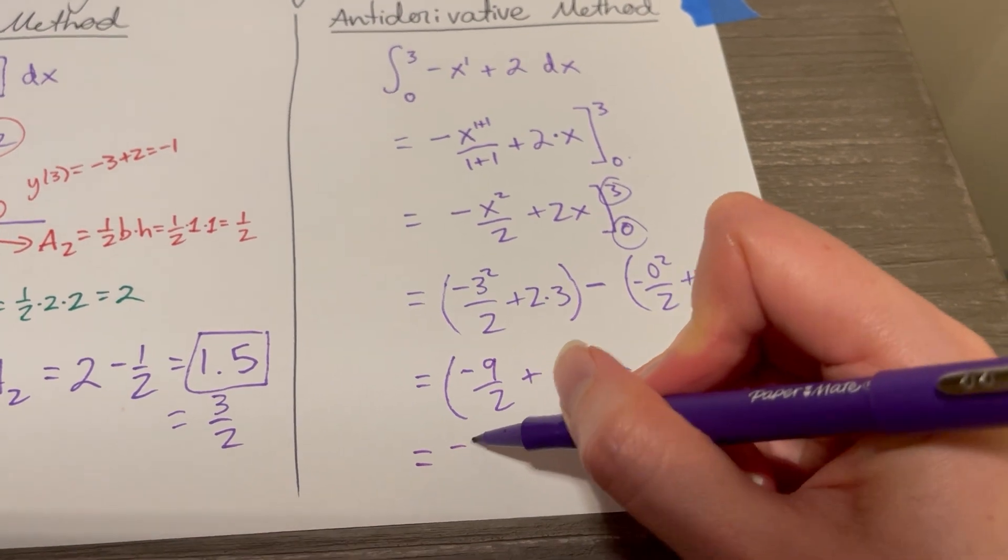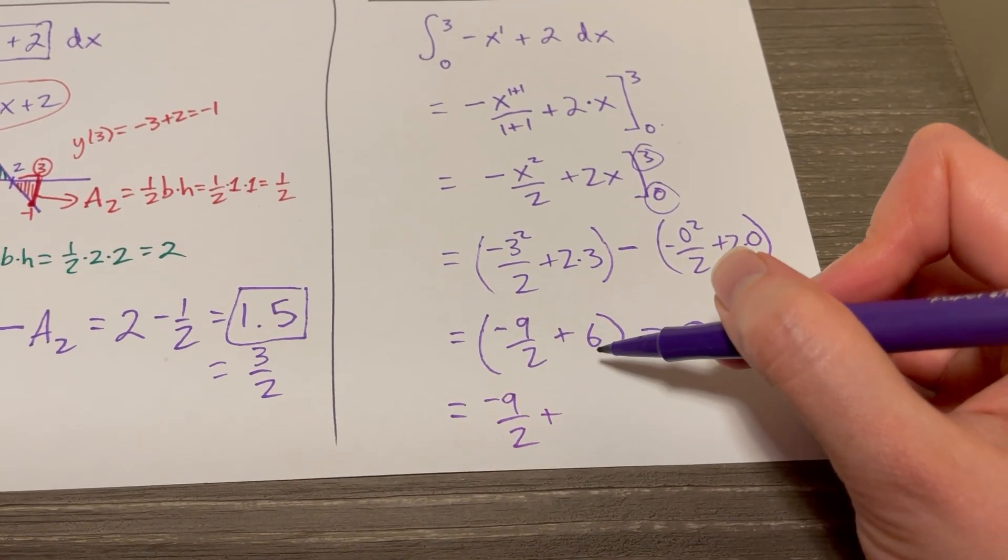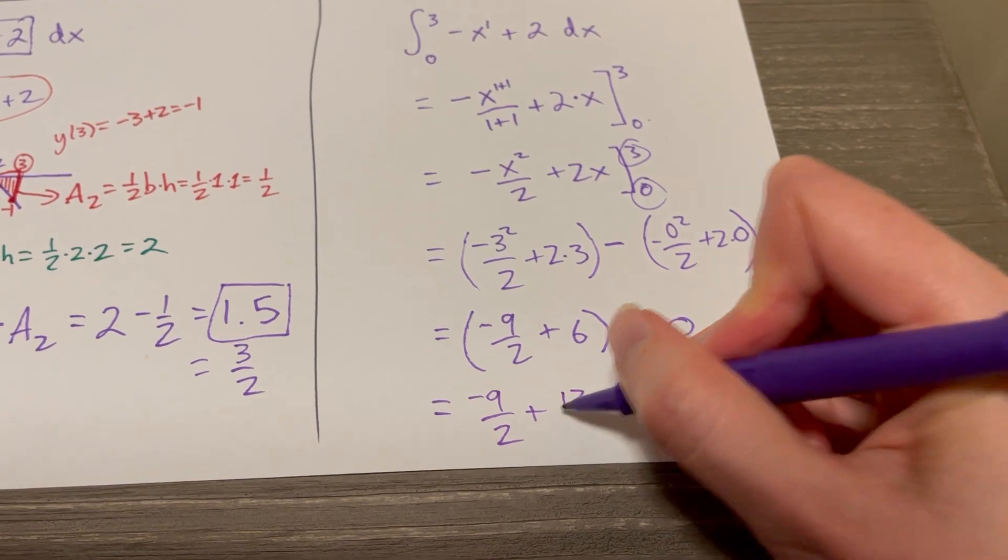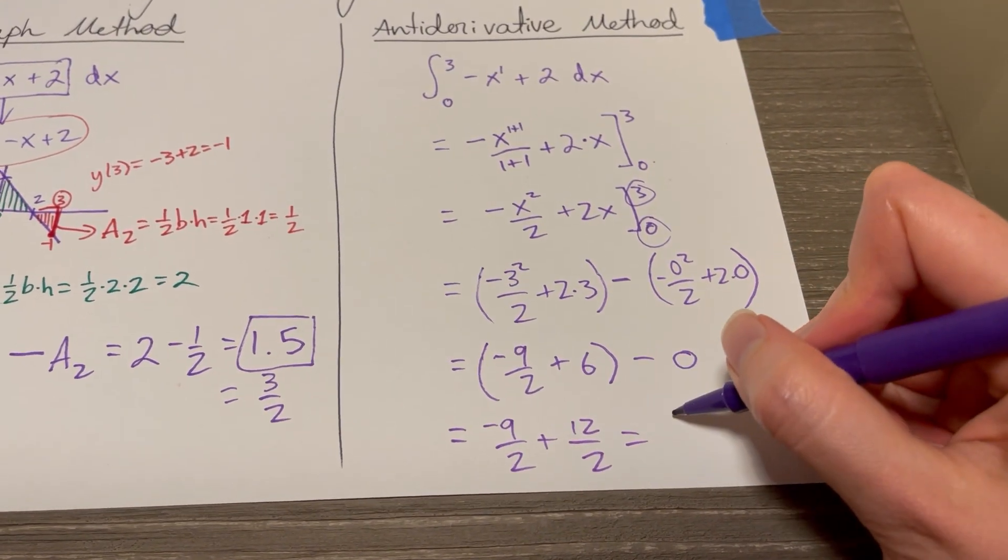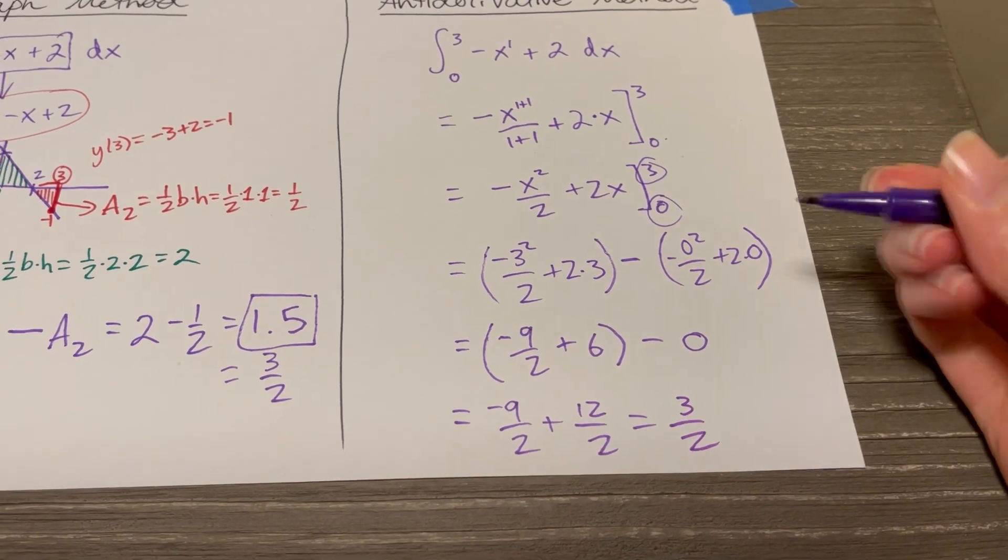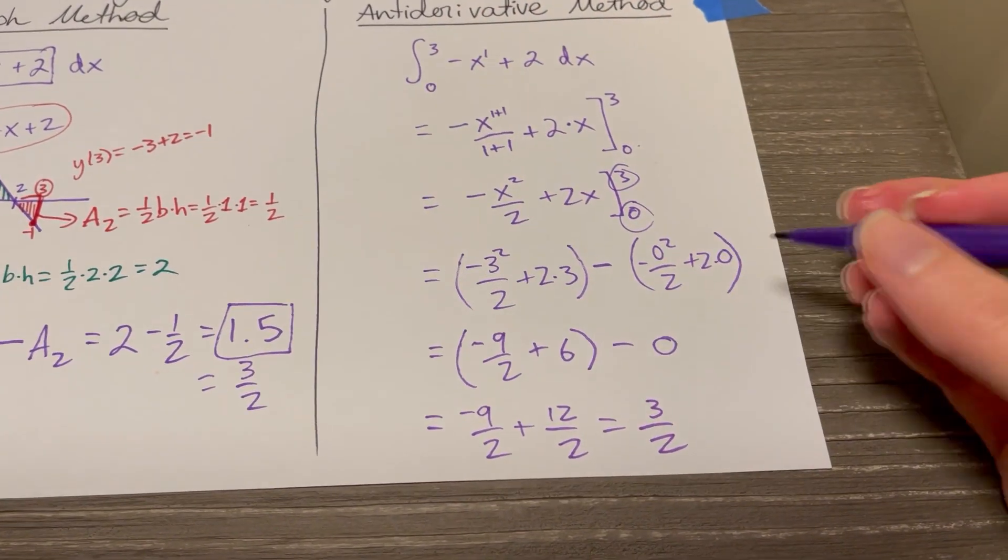And so this is negative nine halves plus, if we want the common denominator, this will be 12 halves. And now you can add the numerators straight across, we have positive three over two, you can see the exact same answer.